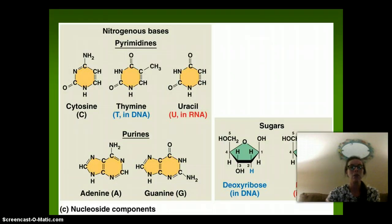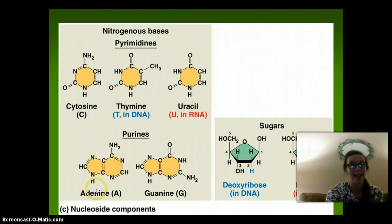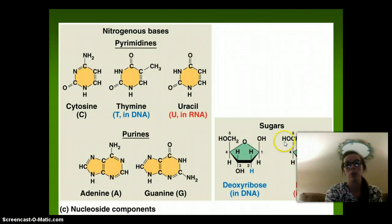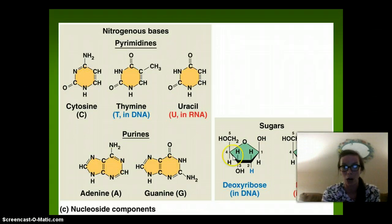Here's what the nitrogen bases look like. We have our cytosine, thymine, and uracil — they are single rings. Our purines — adenine and guanine — are double rings. For the sugar, we have deoxyribose, which has an H, and ribose, which has an OH. Other than that, they are the same molecule, same structure.